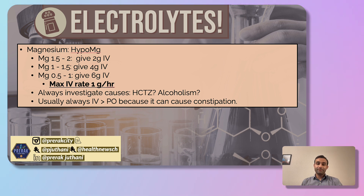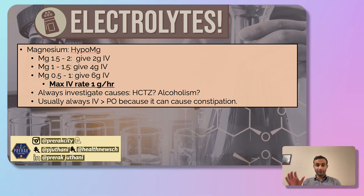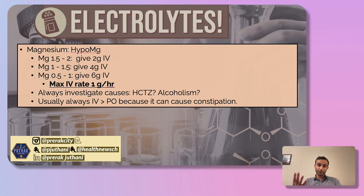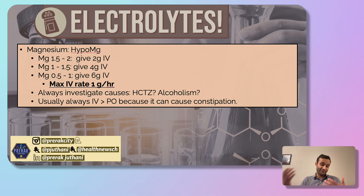For magnesium, this is a straightforward one. I check their magnesium level. If it's below 2, they have low magnesium. If it's between 1.5 and 2, I give 2 grams of IV magnesium. Between 1 and 1.5, I give 4 grams. And between 0.5 and 1, I give 6 grams of IV magnesium.